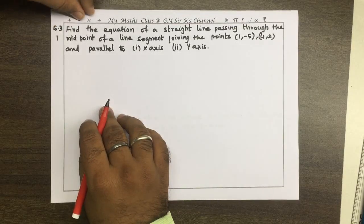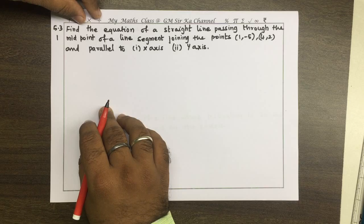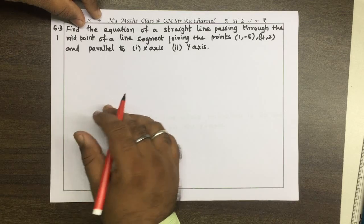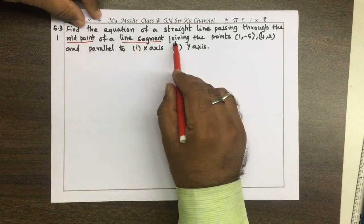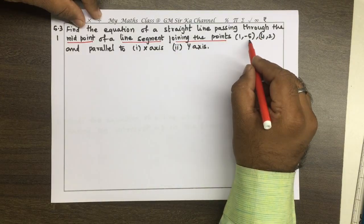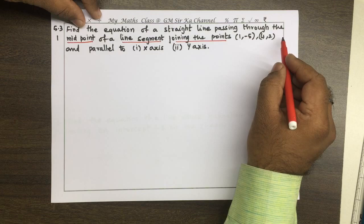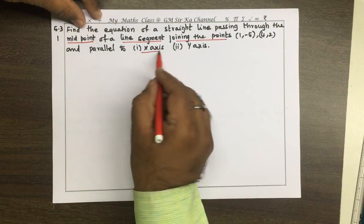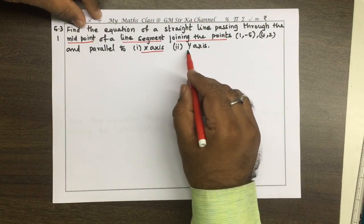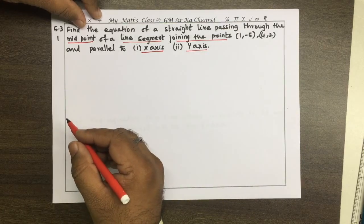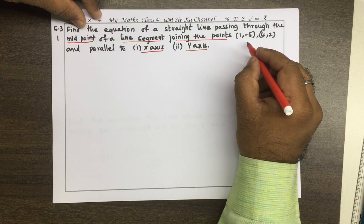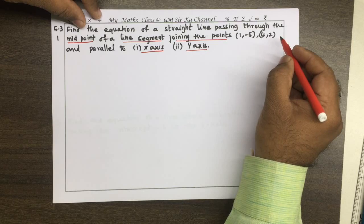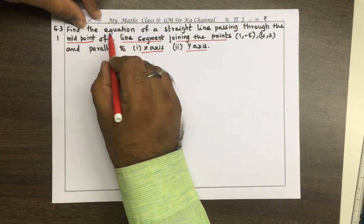Problem: Find the equation of a straight line passing through the midpoint of a line segment joining the points (1, -5) and (4, 2), and parallel to the x-axis, and also parallel to the y-axis. First of all, we have to find the midpoint of (1, -5) and (4, 2), and then find the equation of the straight line.